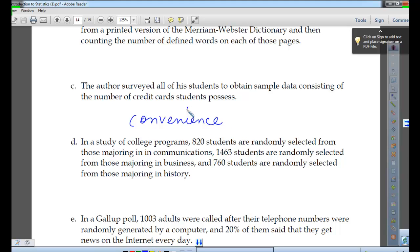In a study of college programs, 820 students are randomly selected from those majoring in communications, 1,463 from business, 760 are randomly selected from history. What does that sound like? Stratified. We got some groups and we're taking a little bit or a sample from each group. Stratified sampling.